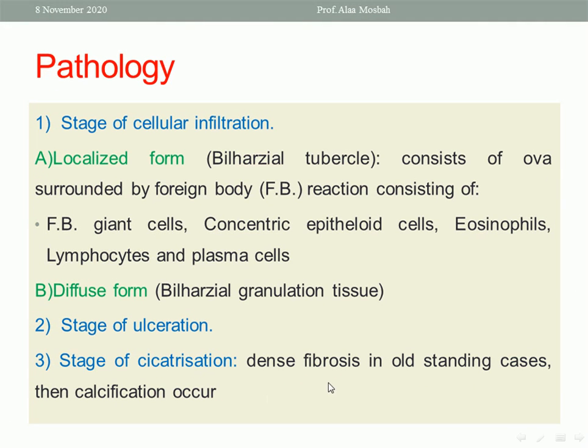What about the pathology? We have three stages: stage of cellular infiltration, stage of ulceration, and stage of cicatrization. The stage of cellular infiltration has two forms: either localized or diffuse. The localized form will cause a bilharzial tubercle, while the diffuse form will cause bilharzial granulation tissue.